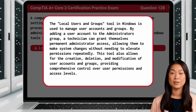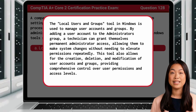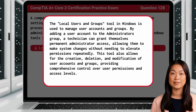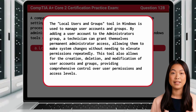The Local Users and Groups tool in Windows is used to manage user accounts and groups. By adding a user account to the administrator's group, a technician can grant themselves permanent administrator access, allowing them to make system changes without needing to elevate permissions repeatedly. This tool also allows for the creation, deletion, and modification of user accounts and groups, providing comprehensive control over user permissions and access levels.